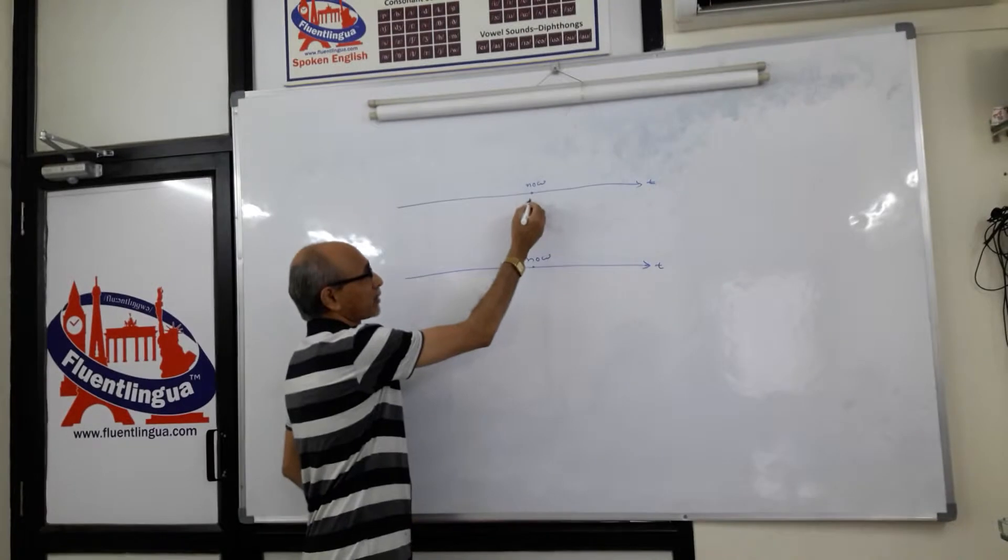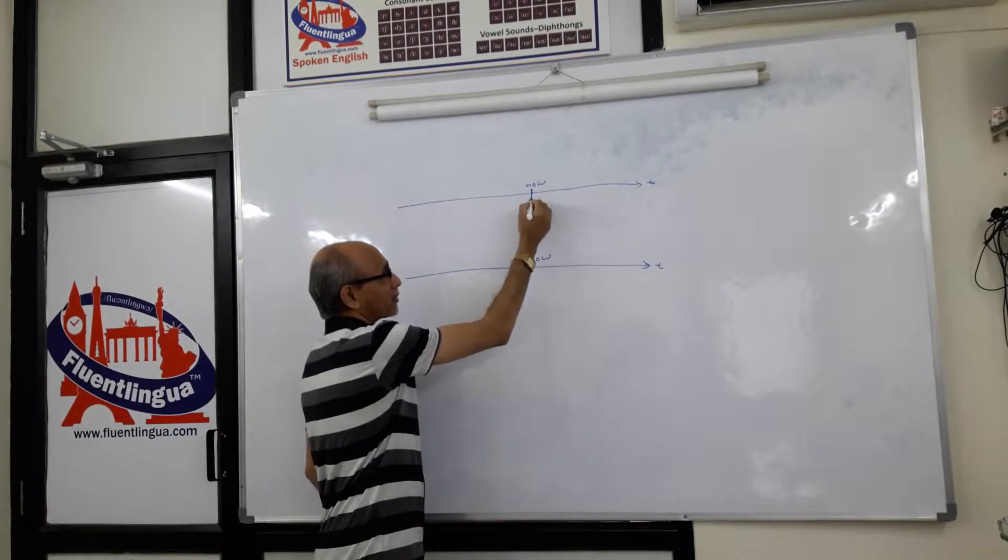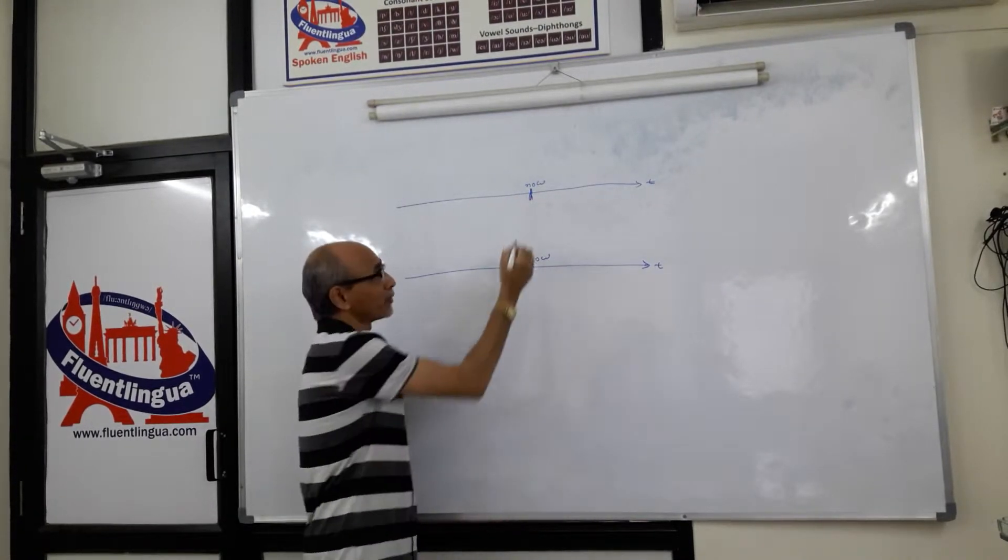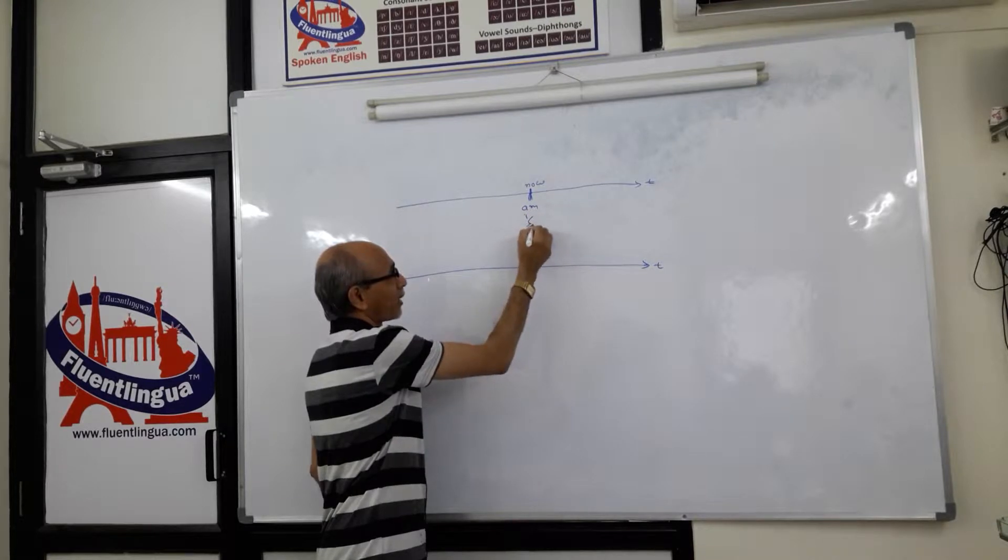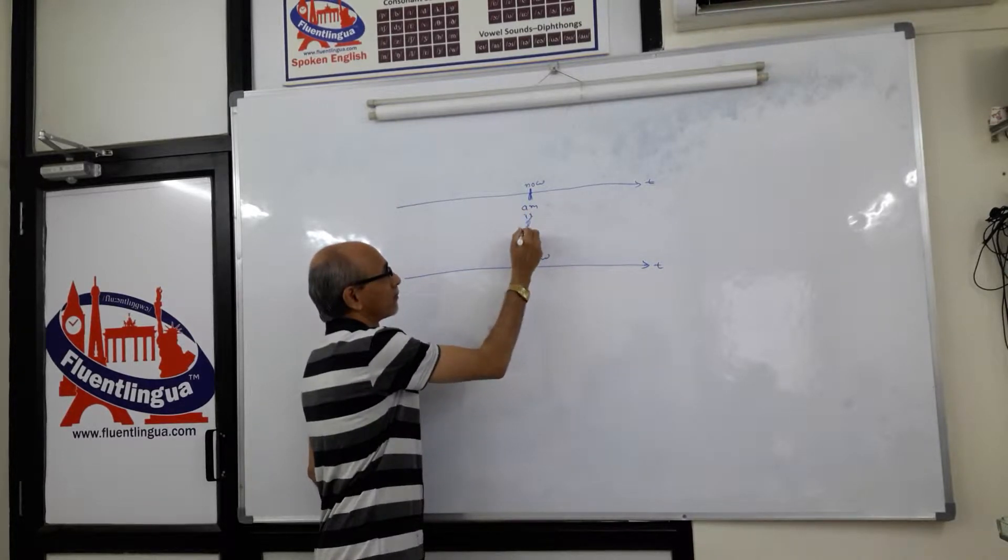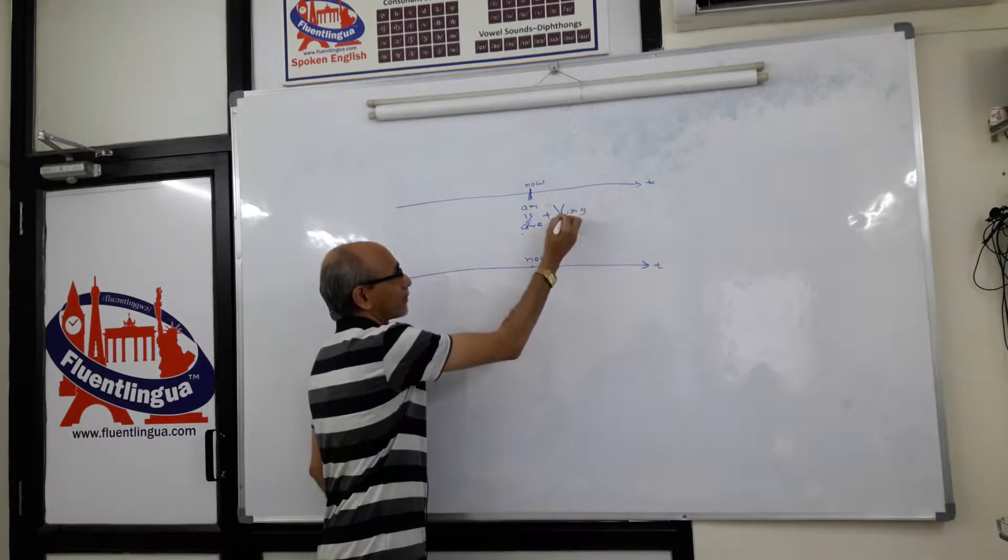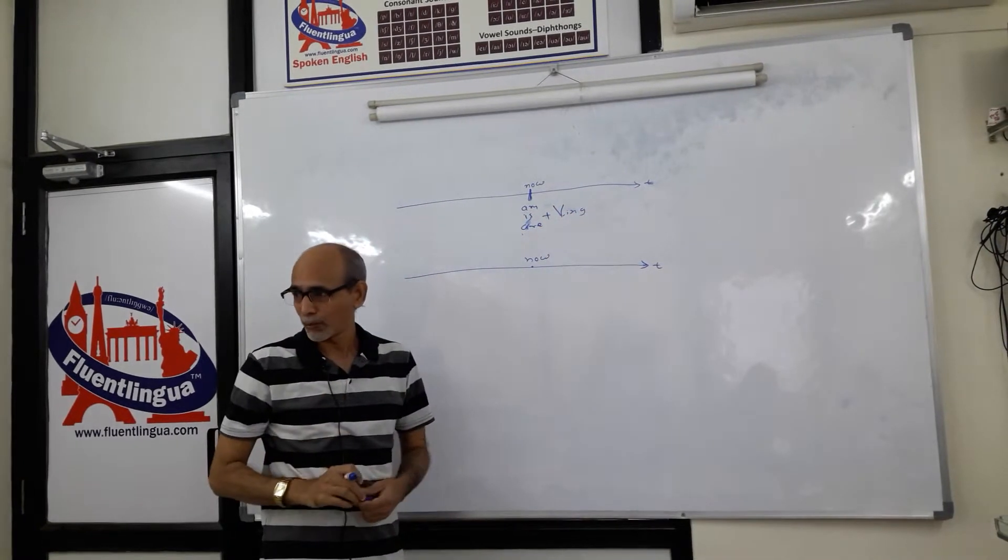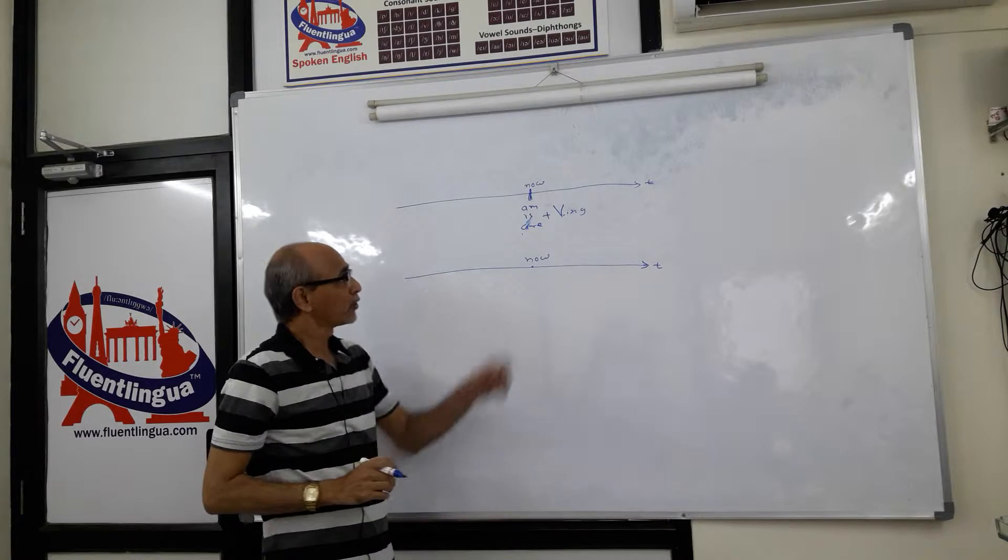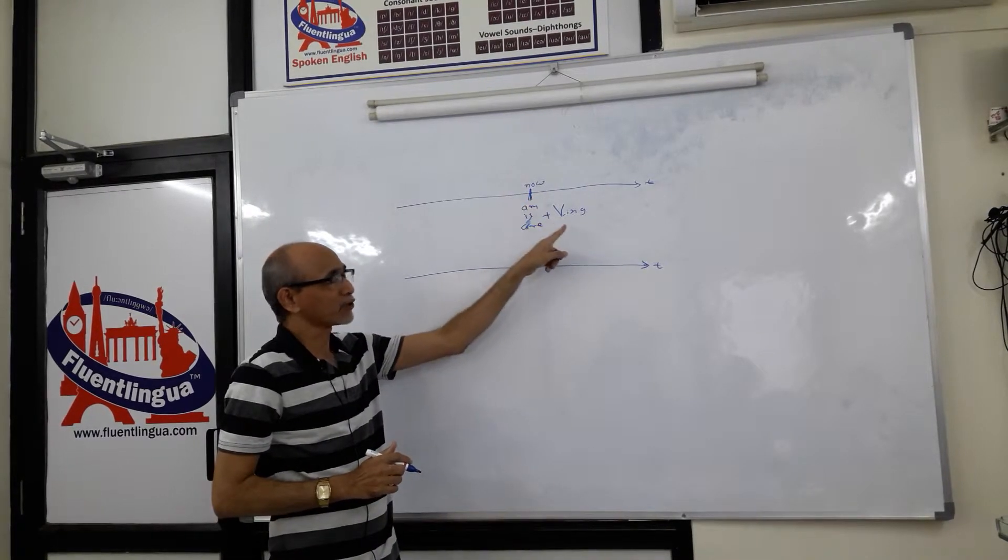When some action is going on at the present moment, we normally use am, is, are and the -ing form of the verb. For example, I am teaching now, we are talking about English. So at this present moment, some action is going on.